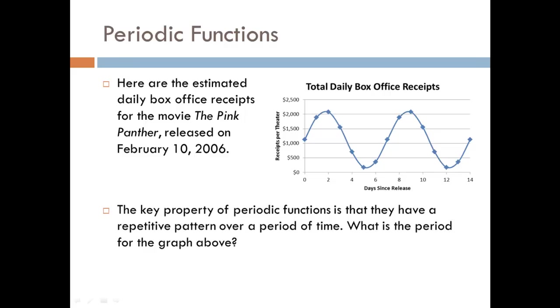So the key property of a periodic function is that it has a repetitive pattern over a period of time. In this case, the total daily box office receipts are rising and falling between a little over $2,000 all the way down to maybe around $200, and it just keeps going up and down. We want to look at what period of time it takes for this to happen over and over again.